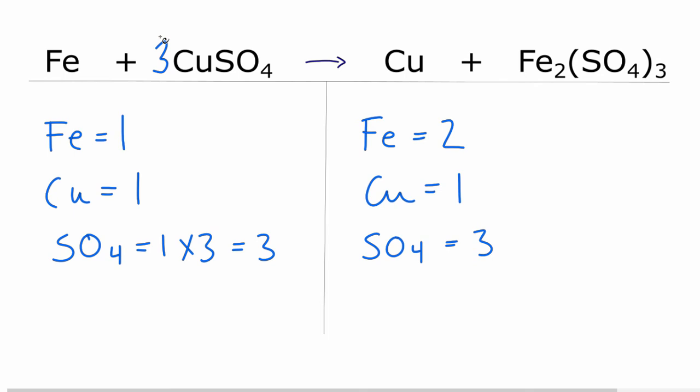We need to update the copper though, because the coefficient three applies to the copper. So one times three, that gives us three coppers. Over here, we could fix that by putting a three in front of this copper and the one times the three. So the coppers are balanced.